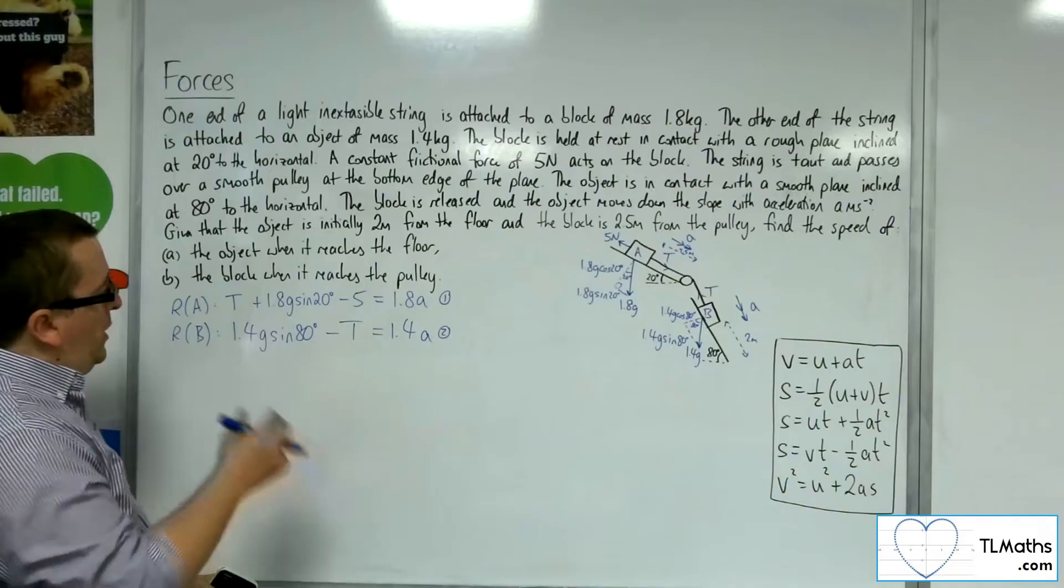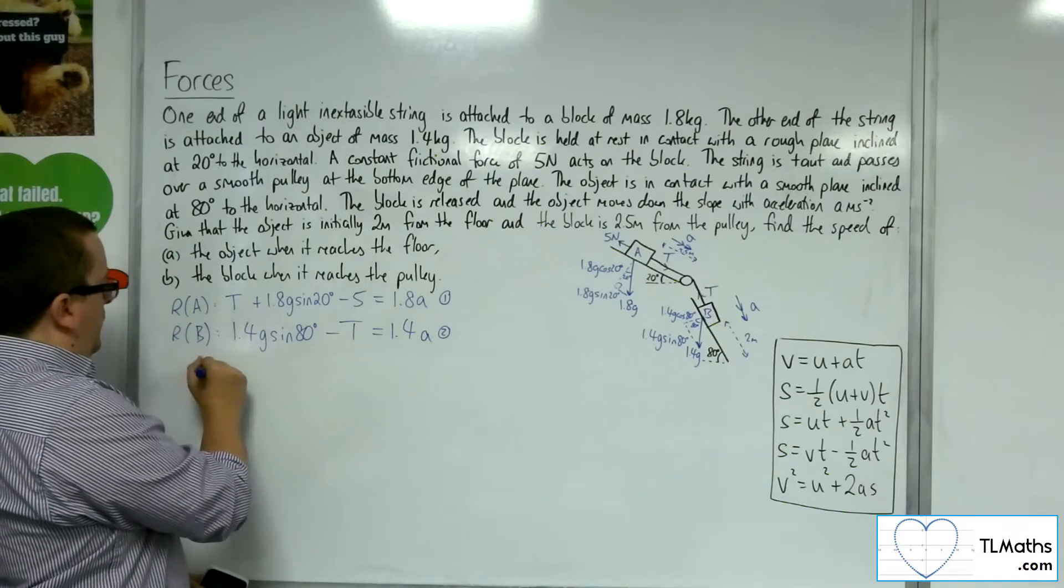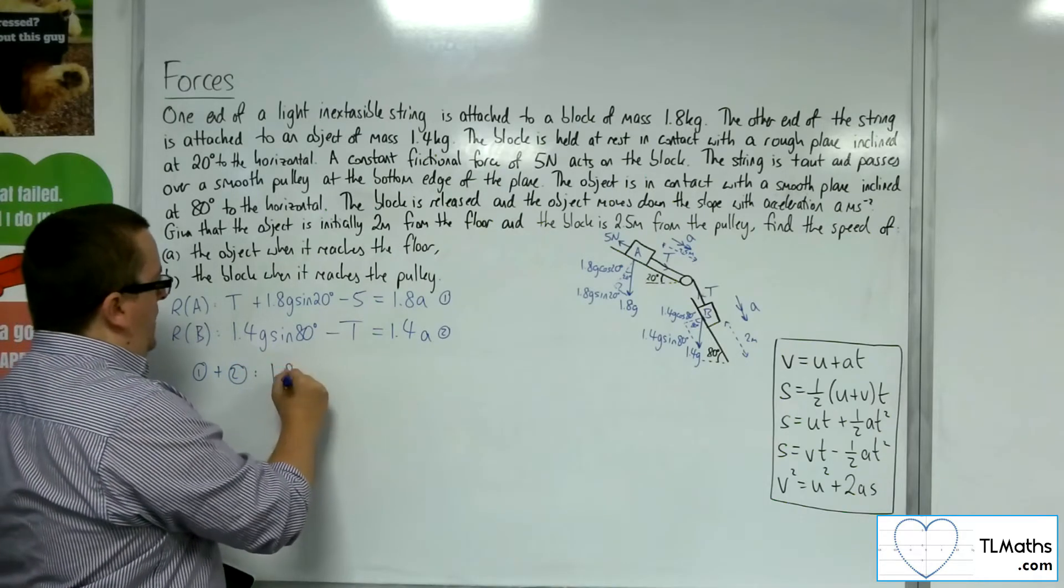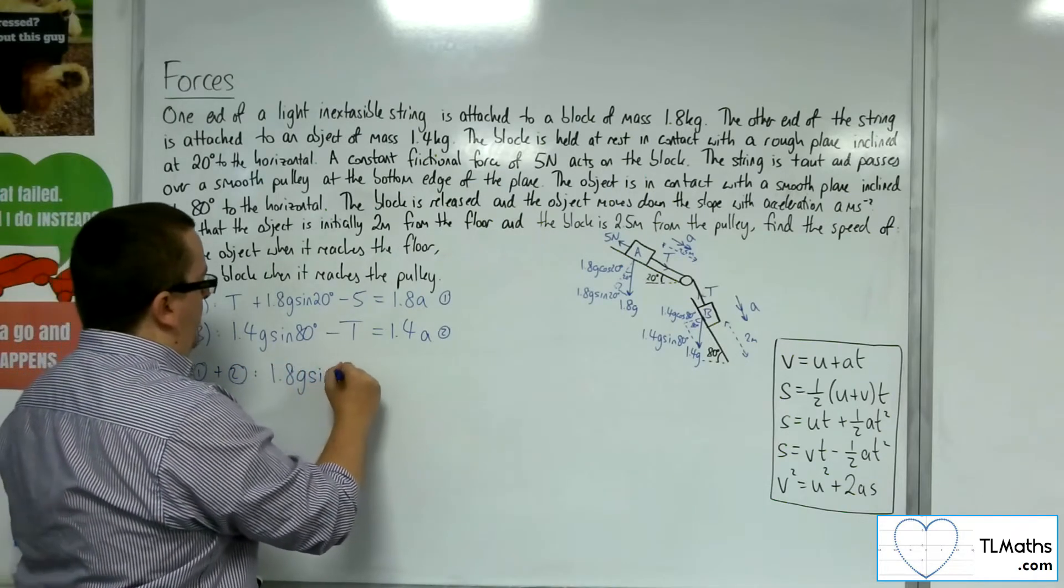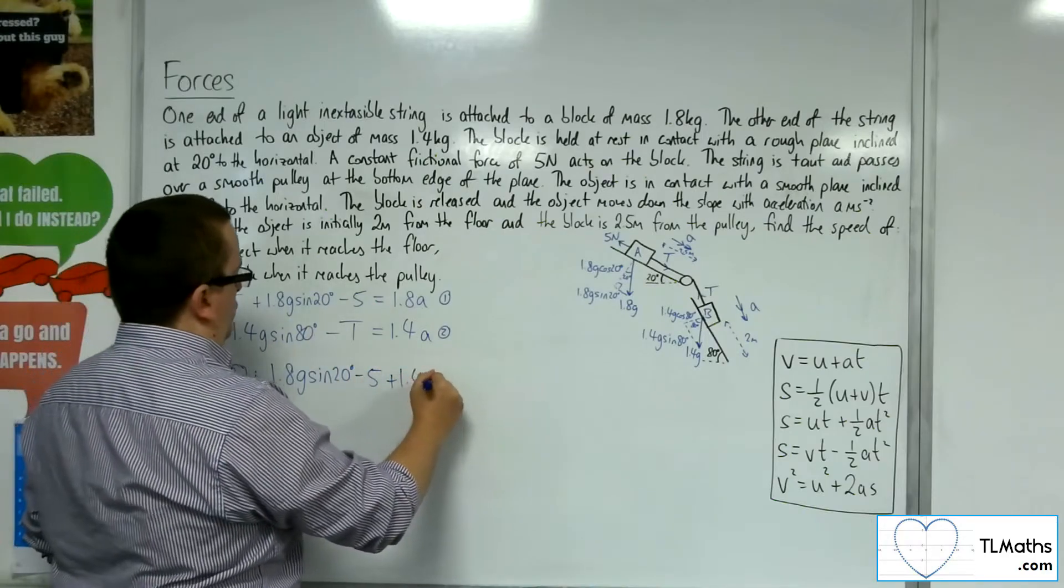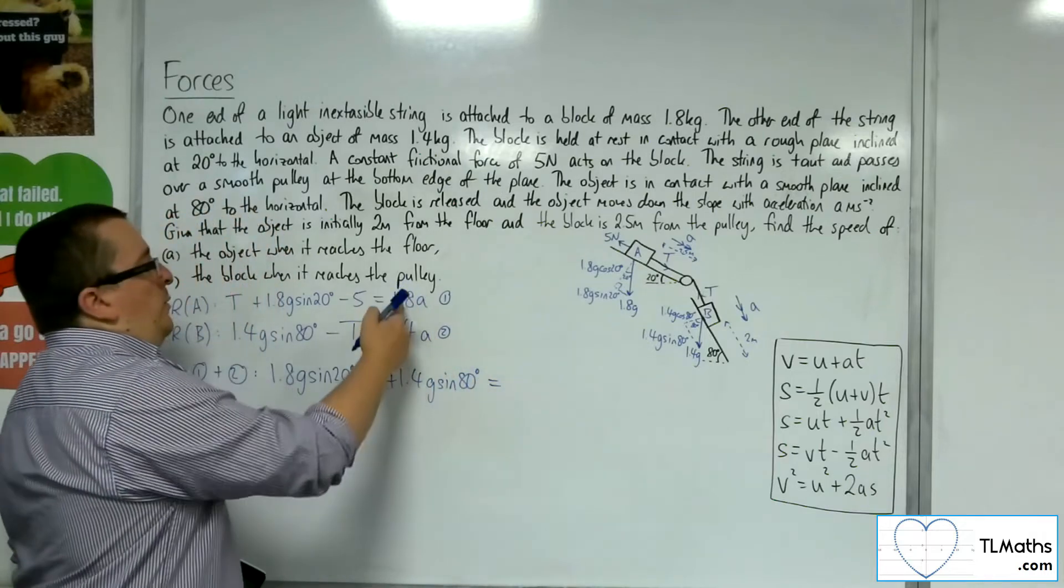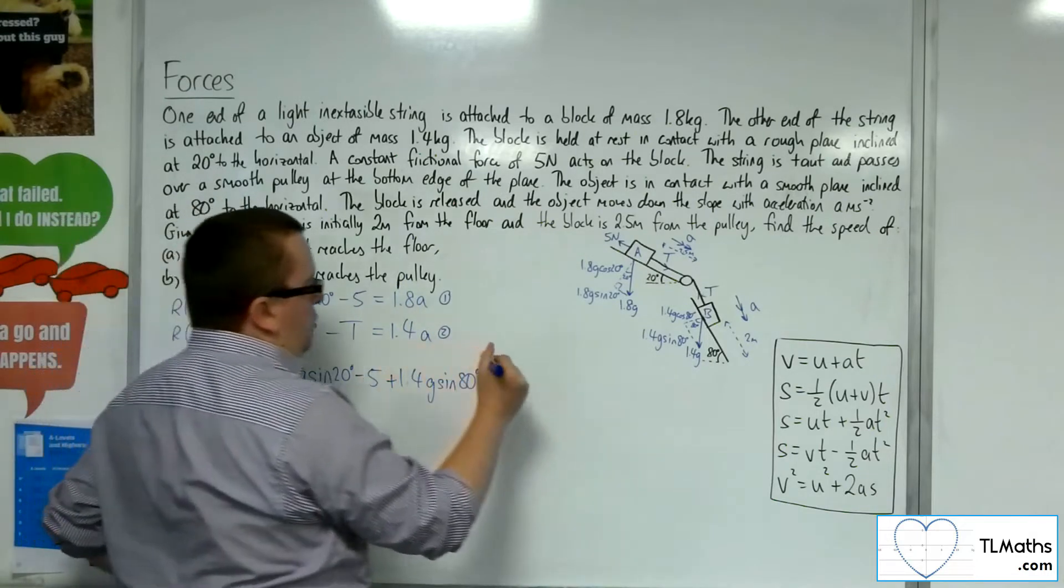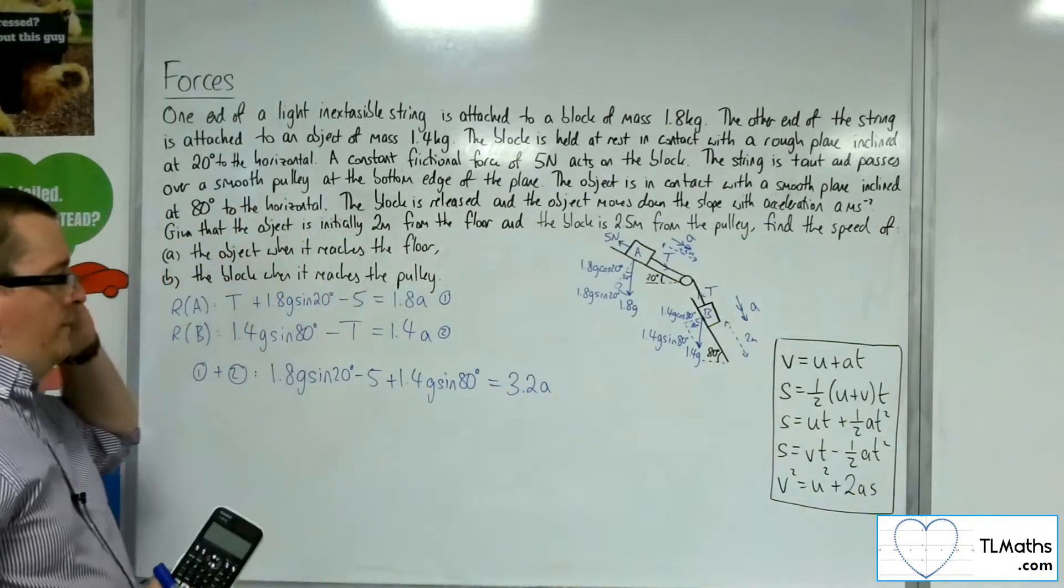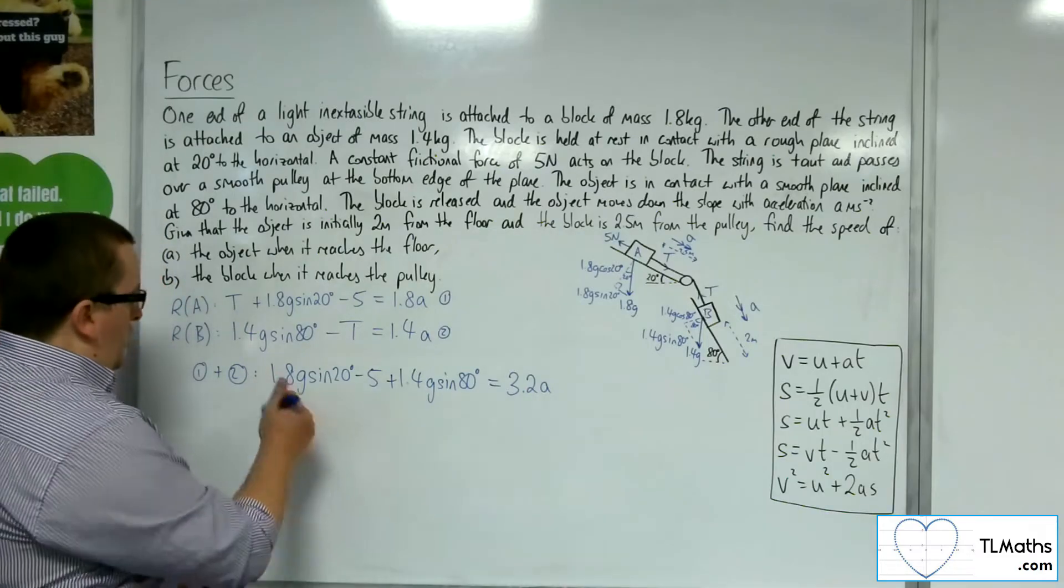Here's equation 1 and equation 2. If I add those two equations together, the T's will cancel. I'm left with 1.8g sin 20 minus 5 plus 1.4g sin 80 equals 1.8 plus 1.4, which is 3.2A. That's my equation, so I can now work out what the acceleration is.